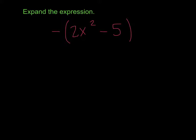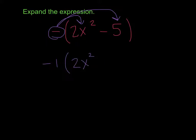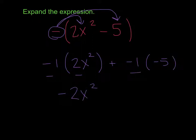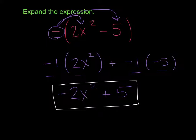This is example 4. It's telling you to distribute a negative to each one of your terms inside the parentheses. That's like saying negative 1 times 2x squared, plus negative 1 times negative 5. A negative times a positive is going to be a negative — that's negative 2x squared. And a negative times a negative is going to be a positive — so that's positive 5. Once we expand it, we get negative 2x squared plus 5.